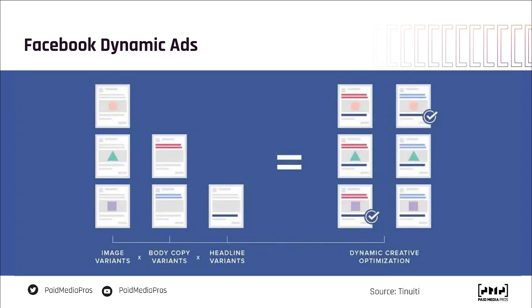I want to start off by giving a visual overview of what dynamic creatives are with Facebook. Rather than putting something together myself, I found a visual from our friends at Tenuity. Here you can see that they added in image variants — a circle, triangle, and square — two body copy variants, red and blue, and then one headline variant.